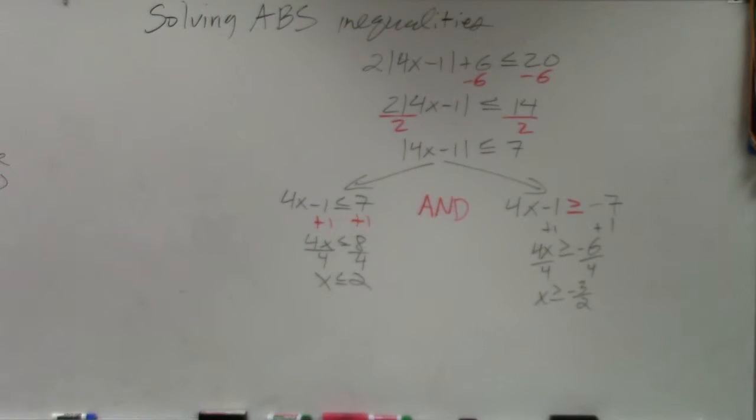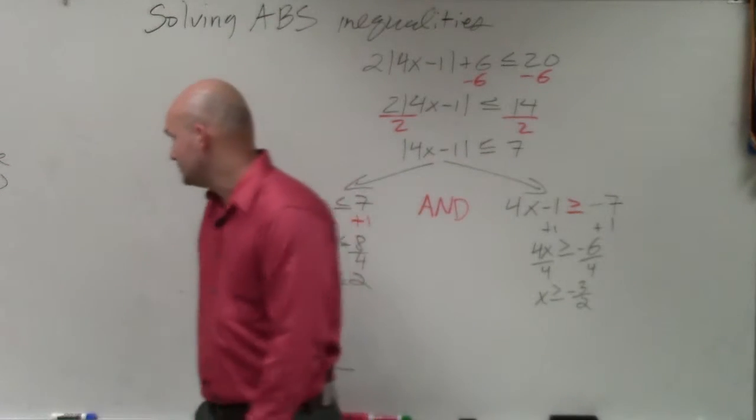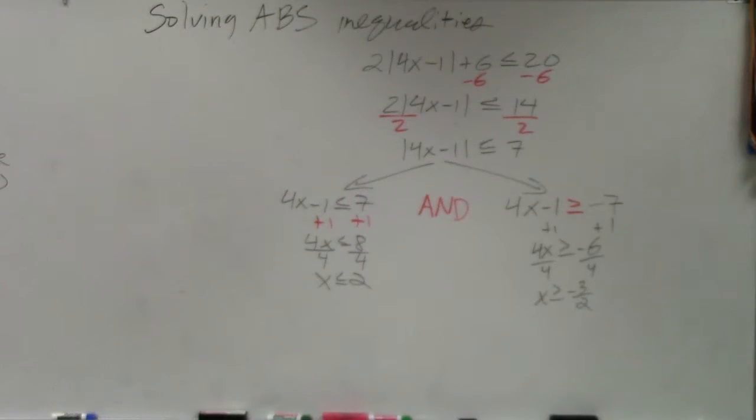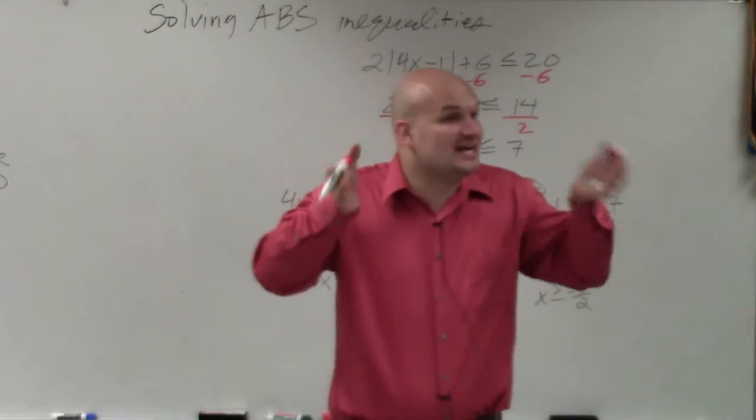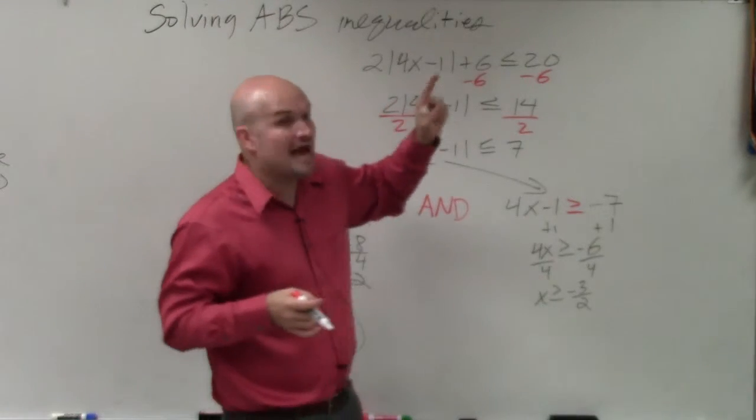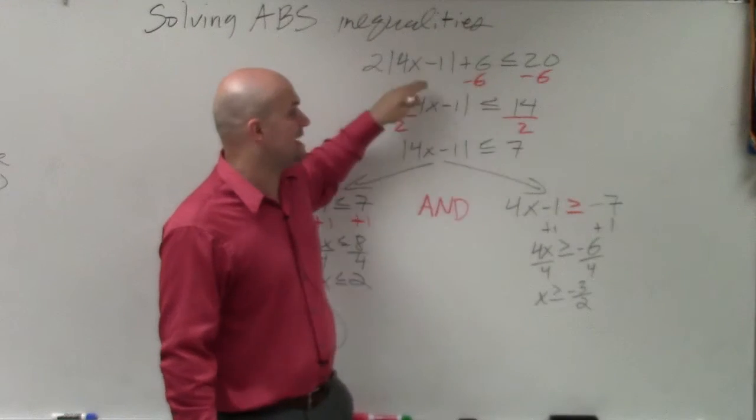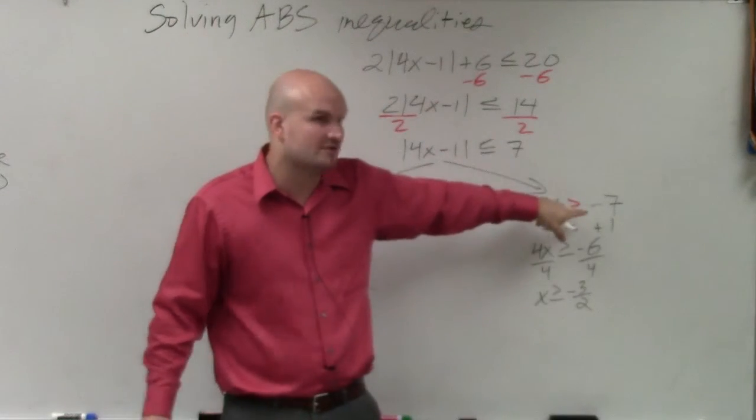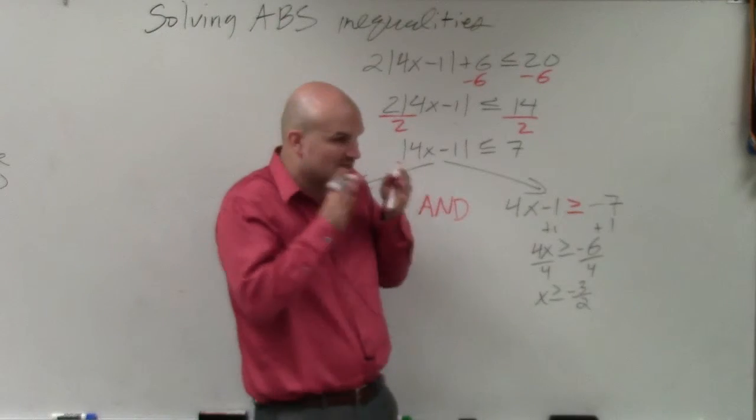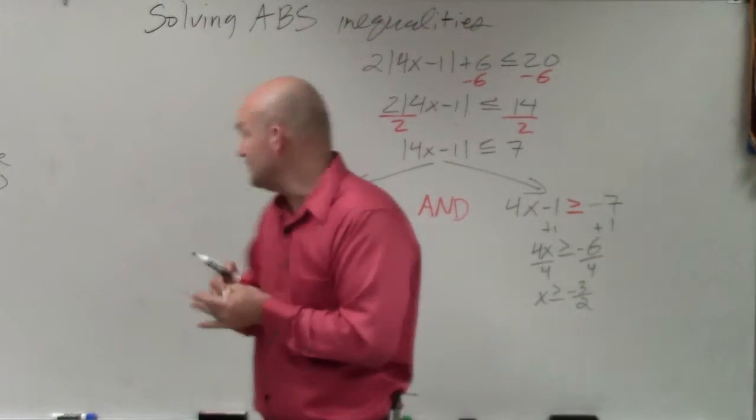How come this one is an and the other one wasn't? Good question. So whenever you're doing a problem and you have a less than or equal to or less than, it's an and conjunction. Whenever you're solving a problem and it's a greater than or greater than or equal to, it's an or. And that comes in after you've isolated the absolute value. Because if you remember, the absolute value we solved in the last problem started with the less than or equal to, right? But once I isolated the absolute value, it turned into a greater than or equal to. So only that works once your absolute value is isolated.